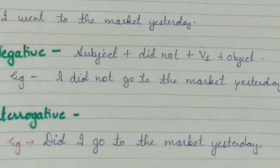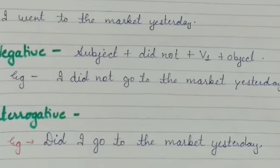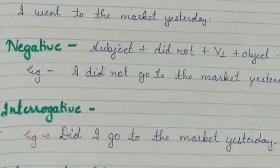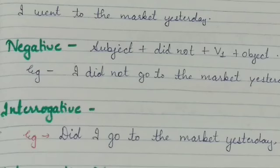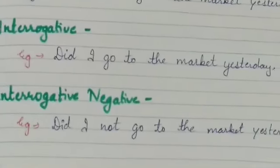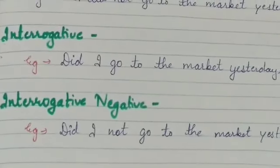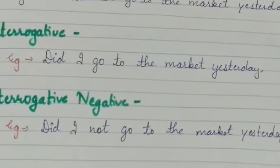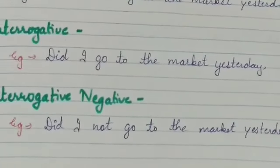The negative form of this tense uses 'did not'. Now, for interrogative sentences, we place 'did' at the beginning of the sentence: 'Did I go to the market yesterday?' For the interrogative negative form: 'Did I not go to the market yesterday?' That is simple past tense.